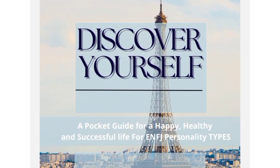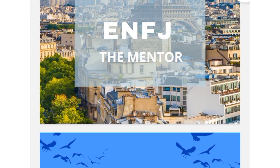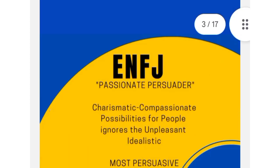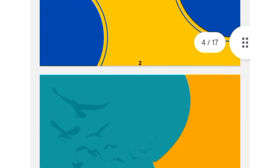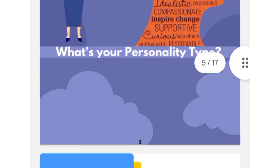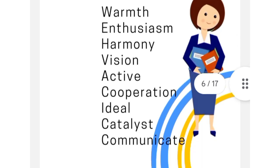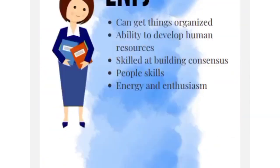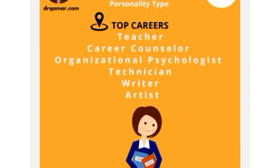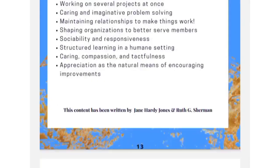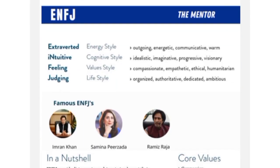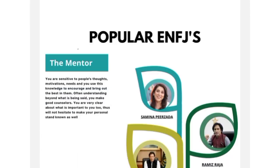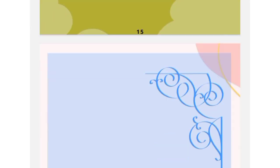The first e-booklet is 'Discover Yourself.' In this booklet, you will find information on your talents, potential strengths, blind areas, suitable careers, your priorities, values, and you will also find famous celebrities listed by personality type.